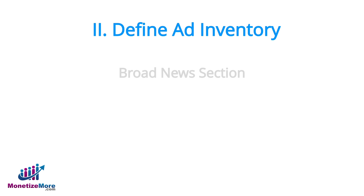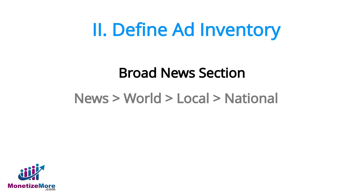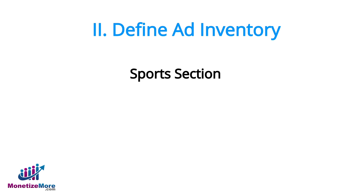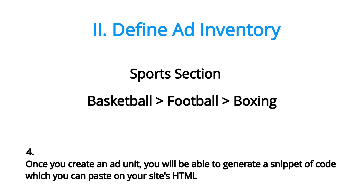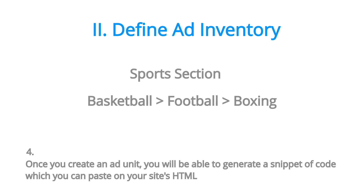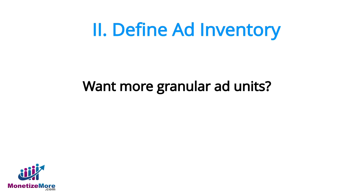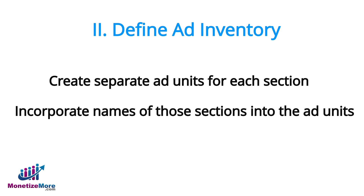For our example site, we have eight sections: a broad news section comprised of world, local, and national sections, and a broad sports section comprised of basketball, football, and boxing sections. If you want your ad units to be granular, you may want to create separate ad units for each section and incorporate the names of those sections into the ad units.